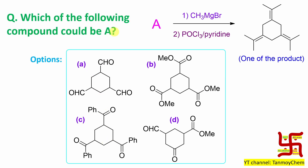Step 3: which of the following compounds could be option A? From this discussion, we understand the answer. Now, if this question is provided in your exam, how can you get the right answer in less than 30 seconds? You need to remember: it is a symmetrical product, tri-substituted. So you need a tri-substituted symmetrical reactant. Options A, B, and C qualify, but option D is not a symmetrical tri-substituted compound, so option D is gone.